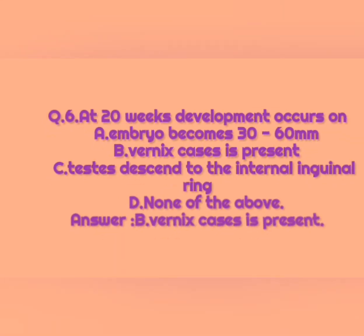Question number six: At 20 weeks, development occurs on — option A: embryo becomes 30 to 60 mm, option B: vernix caseosa is present, option C: testes descend to the internal inguinal ring, option D: none of the above. The correct answer is option B, vernix caseosa is present.